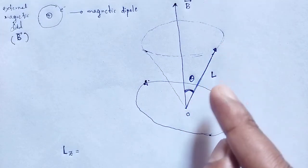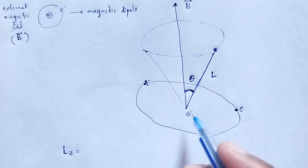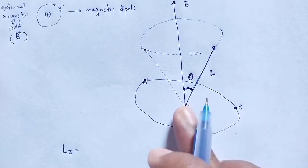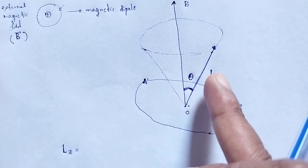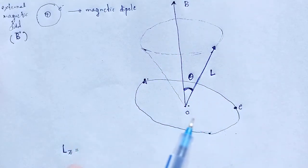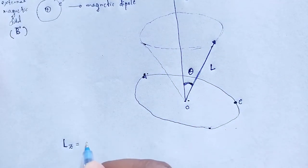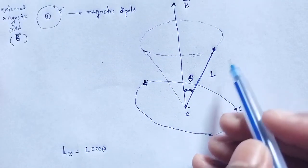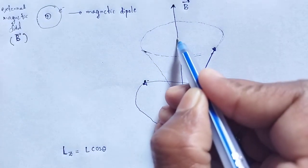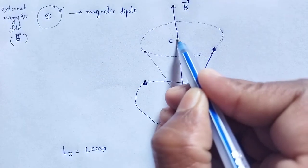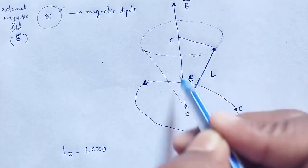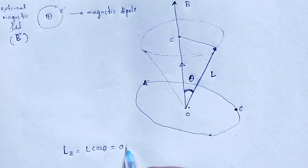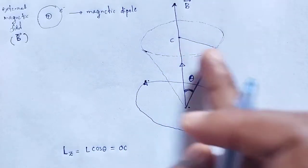If we resolve that vector in terms of rectangular coordinates, that portion will be L cos theta and this portion will be L sin theta. Since the component of L parallel to B is the z-component, L_z is equal to L cos theta. The z-component is L cos theta.